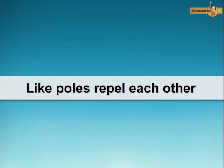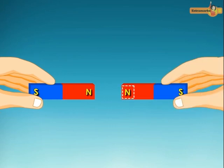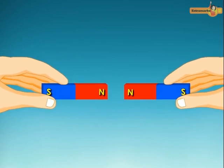Like poles of magnets repel each other. When the North Pole of one magnet is brought close to the North Pole of another magnet, the two poles repel each other.